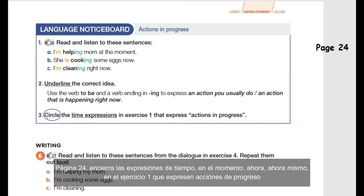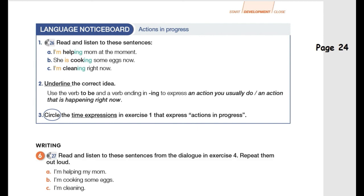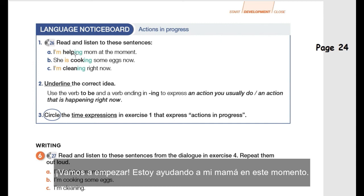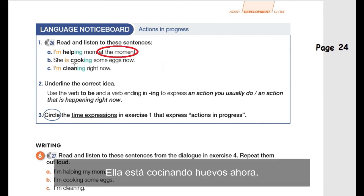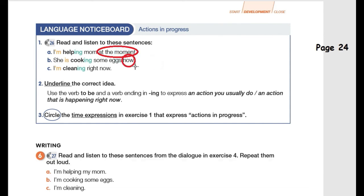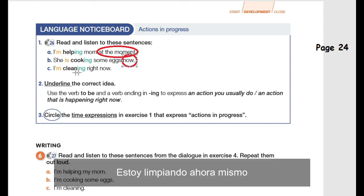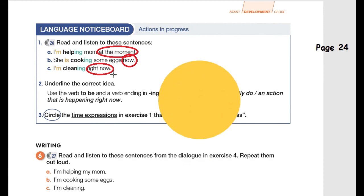First, circle the time expressions at the moment or right now, now, in the exercise number one that expresses actions in progress. Let's circle. I'm helping mom at the moment, en el momento. She is cooking some eggs now, ahora. I'm cleaning right now, ahora mismo. And that's it.